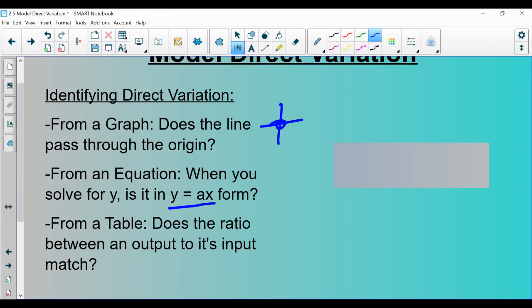If it's got like a plus three in it, or it doesn't for some reason go into this form, it's not direct variation.